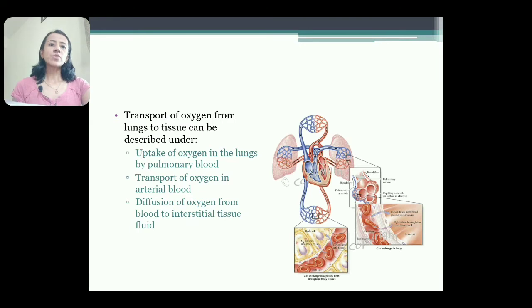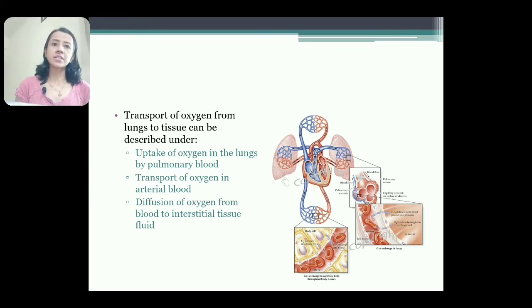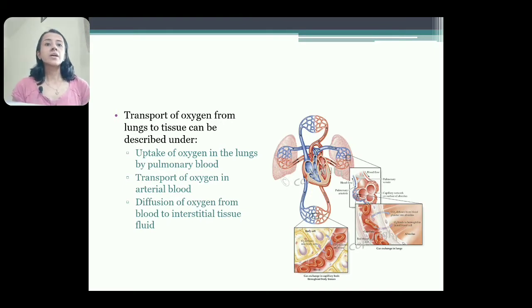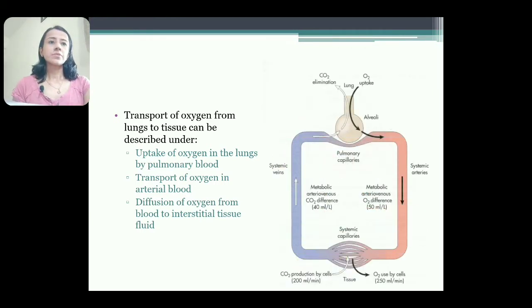The transport of oxygen can be described under three headings. First, that is uptake of oxygen in the lungs by the pulmonary blood. Second, oxygen is transported in the arterial blood. And third, that is diffusion of oxygen from blood to the interstitial tissue fluid.